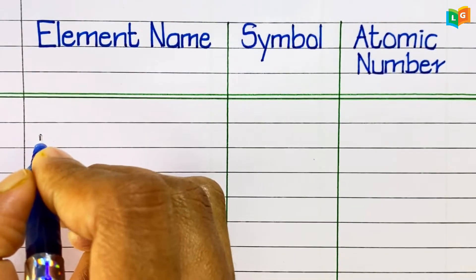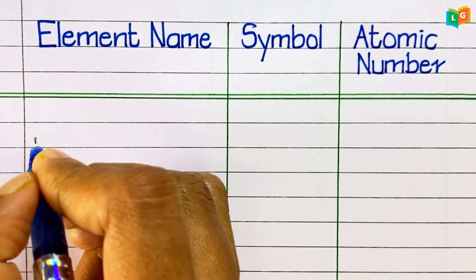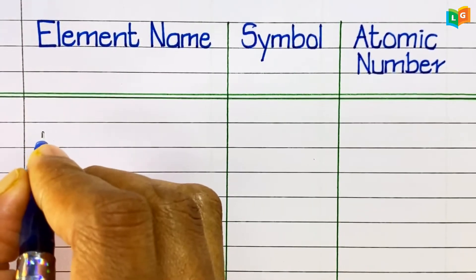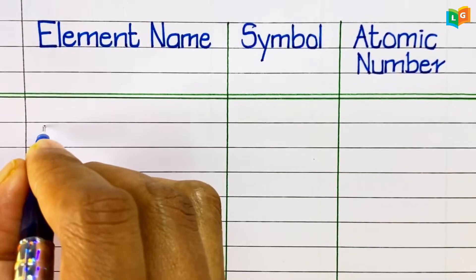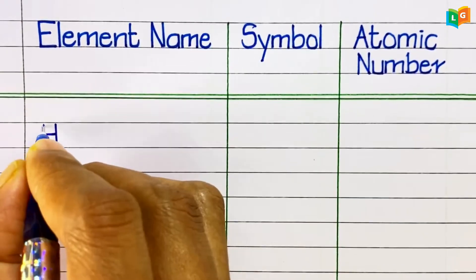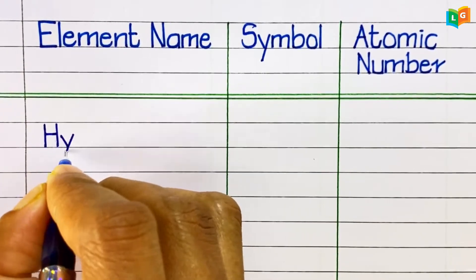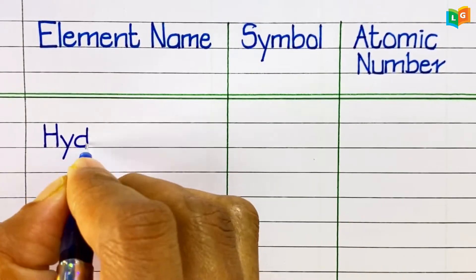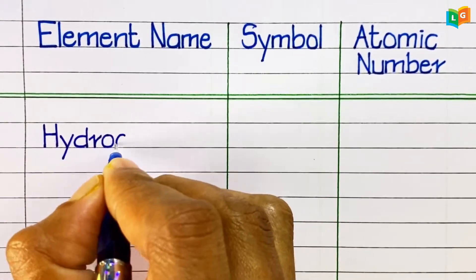Hello friends, welcome to our channel Easy Learn and Grow. In today's video, we are going to learn and write 100 elements' names and their symbols with atomic number. So, let's start the video.